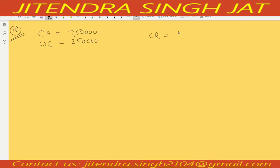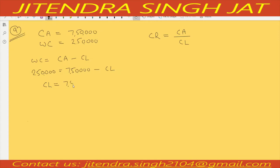Current ratio means current assets upon current liabilities — both are not directly given. But we have the formula: working capital equals current assets minus current liabilities. Working capital is 2,50,000 and current assets is 7,50,000, so we can compute current liability: 7,50,000 minus 2,50,000 equals 5,00,000.